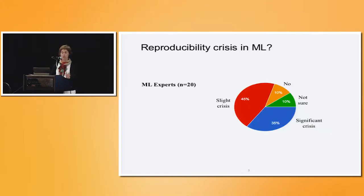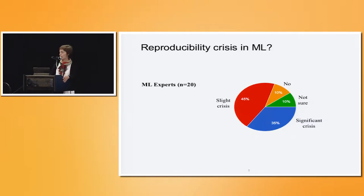I pulled aside 20 colleagues in a smaller meeting about eight or nine months ago and asked them the same question: is there a reproducibility crisis in machine learning? Most are mid-career to senior fellows in the CIFAR program on learning in brains and machines. 45% said there's a slight crisis, 35% a significant crisis, and a couple weren't too sure. So there's some awareness of this issue within our community.